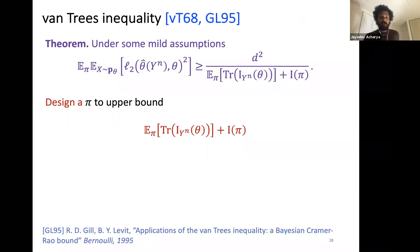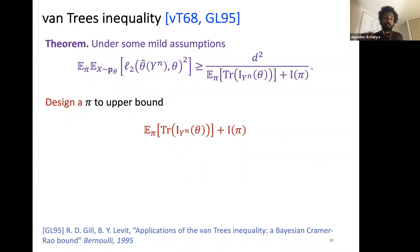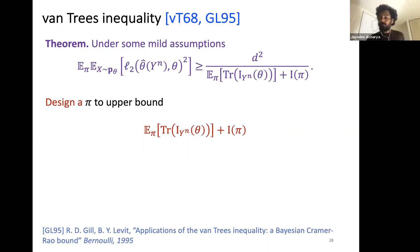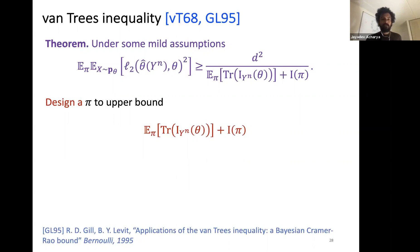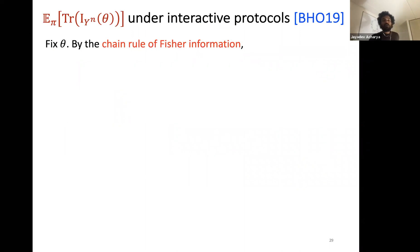In this slide we have replaced x with y^n because we are estimating theta after observing only y^n. To lower bound the estimation error, we design a prior pi to upper bound the denominator on the right-hand side.